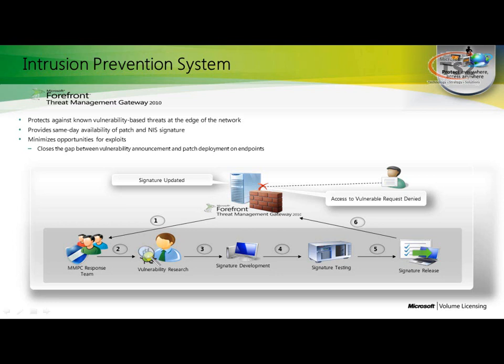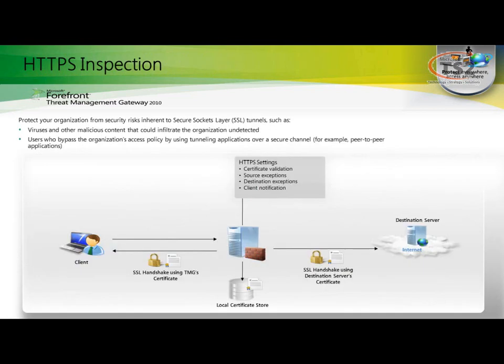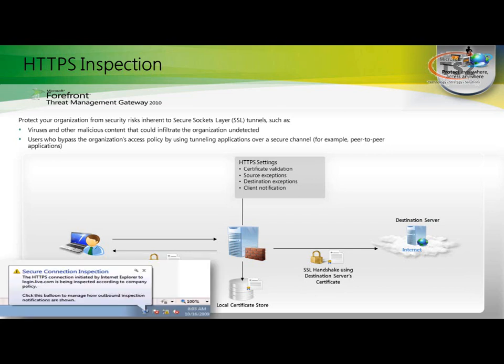A lot of companies require the use of HTTPS for their websites, but traditionally the exposure has been that when a user from your environment uses an HTTPS connection, you can't see what they're doing and you can't protect what they're downloading. Forefront Threat Management Gateway gives us the ability to actually break that HTTPS connection so that we can do validation on that data going back and forth. HTTPS inspection gives us the ability to inspect and review the contents of HTTPS connections, so if users are surfing to sites on the internet — even if it's an HTTPS connection — that could still be downloading malicious software. We can still inspect and protect the user from that.